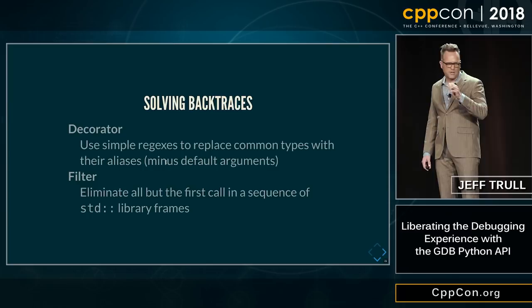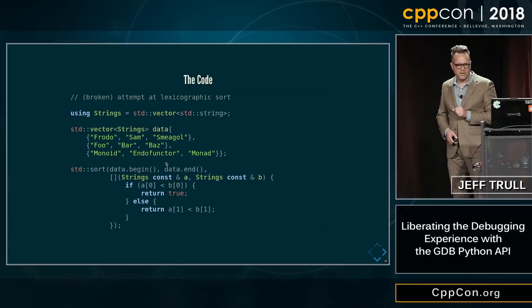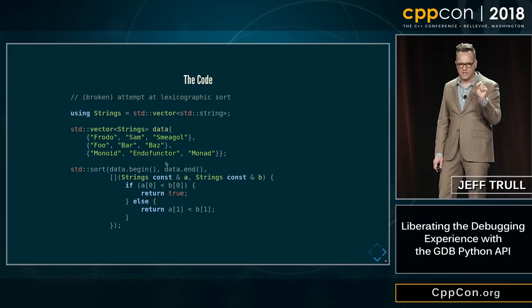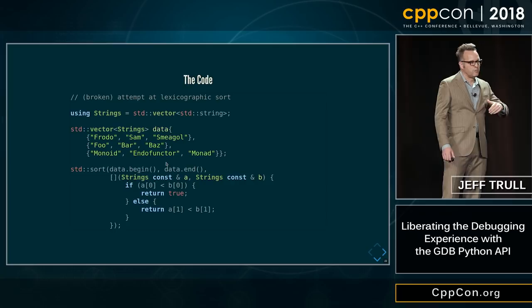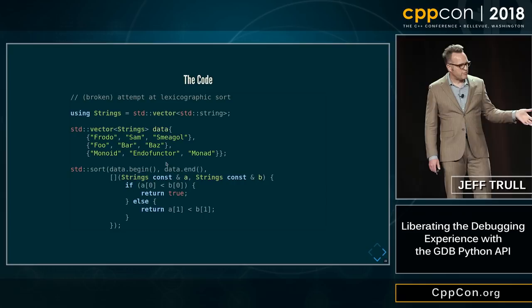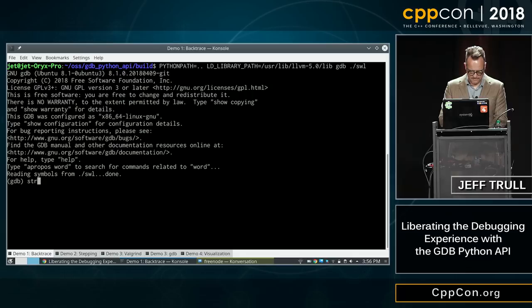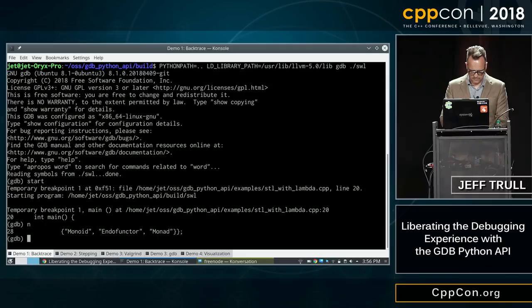Here's our demo. The example program I'm going to use is a broken sort. We're trying to sort vectors of vectors of strings based on a lexicographic compare on the first two strings in each vector. We're using std::sort and supplying our own comparator, it's just that it's wrong. So if we're using the debugger to debug this, we may not have the best time the way things are right now. Here's our std::sort call — we want to get down inside this lambda, so that's line 33, so let's place a breakpoint on line 33 and continue.